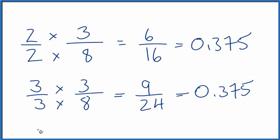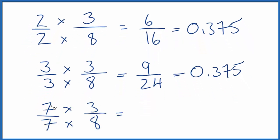Let's do one more. How about seven over seven? Again, seven over seven is one. We're not changing anything. But now we have seven times three is 21. Seven times eight is 56.